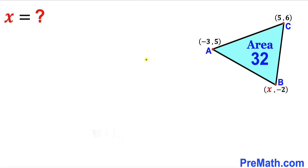Welcome to pre-math. In this video we have triangle ABC such that vertex A is negative 3, 5, vertex B is x, negative 2, and vertex C is 5, 6. Furthermore, the area of this blue triangle is 32, and our task is to find the value of x.